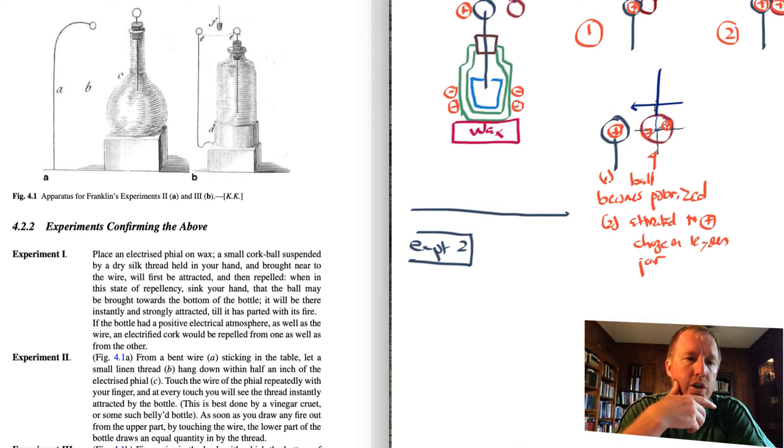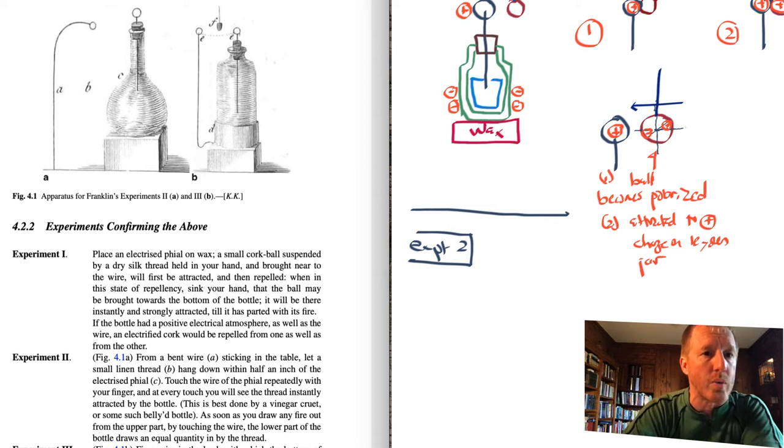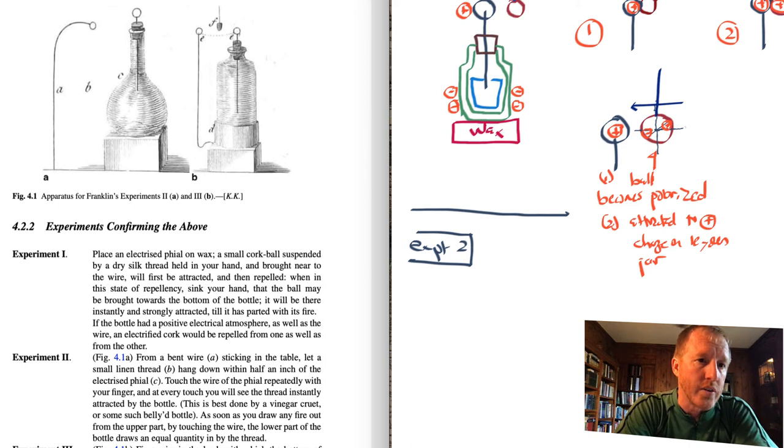Then he says now touch the wire of the file repeatedly with your finger. And at every touch, you will see the thread instantly attracted by the bottle. So in other words, that hanging thread swings over toward the outside of the glass bottle. Why would it be doing this? Well, when you touch your finger to the positively charged ball that's attached to the wire going into the bottle, your finger becomes positively charged. It picks up some of that positive charge. It goes down through your arm, through your elbow, let's say that's resting on the table, and then it can go up through that wire A up to the ring and down through the thread. Now that thread has a slight positive charge. It has some positive electricity. And since the exterior of the jar is negatively charged, it swings over toward it so as to complete the circuit. So you might imagine this jar has a positive and negative separation of charge between the interior and exterior. And you are providing through your finger, your arm, your elbow, the table, the wire A and the thread, a circuit through which this positive charge can go back through and be attracted to the negative charge on the outside of the bottle. So that's an explanation of experiment two.